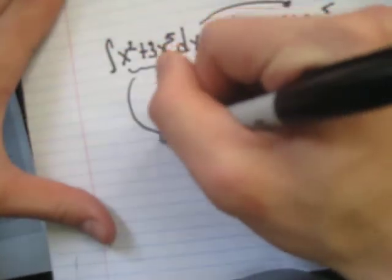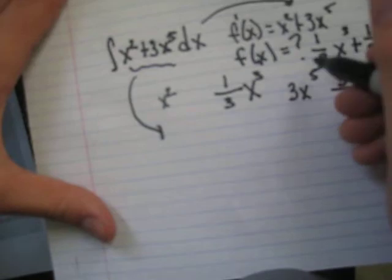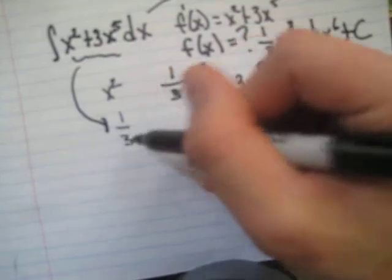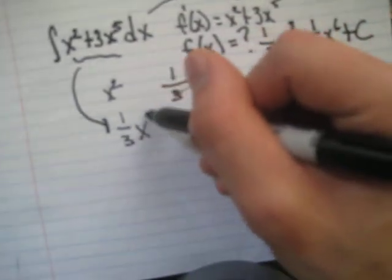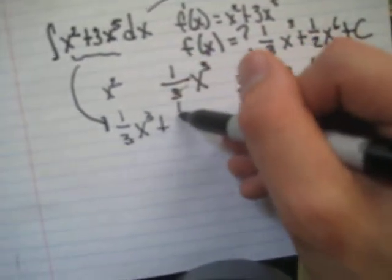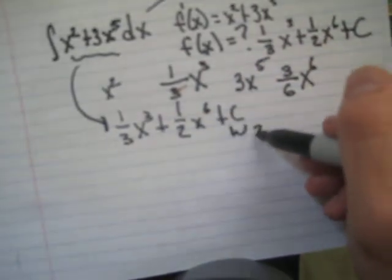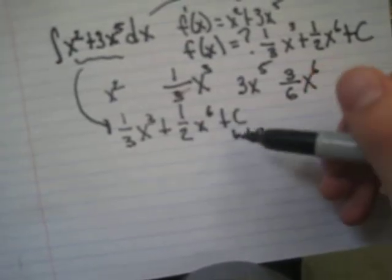Well, so we know that the answer to this problem now is what we found over here, which is 1 third x cubed plus 1 half x to the sixth plus c. But where the heck did I just bring that in from? Well, c is a constant.